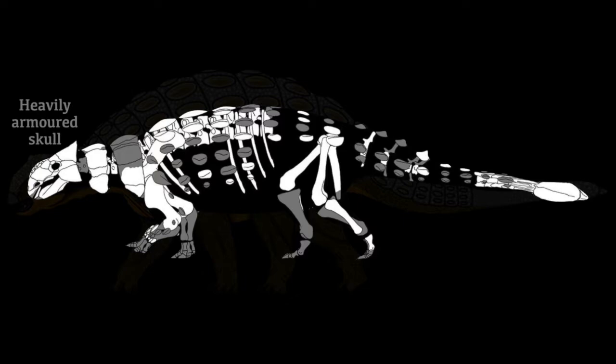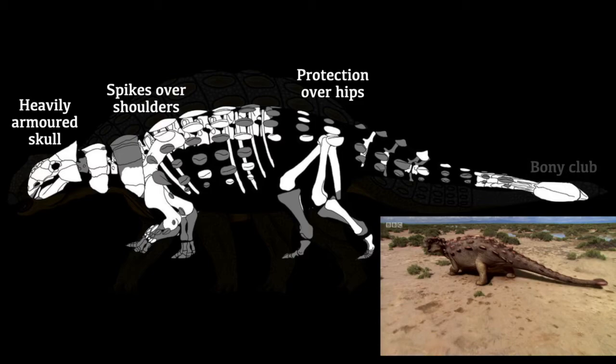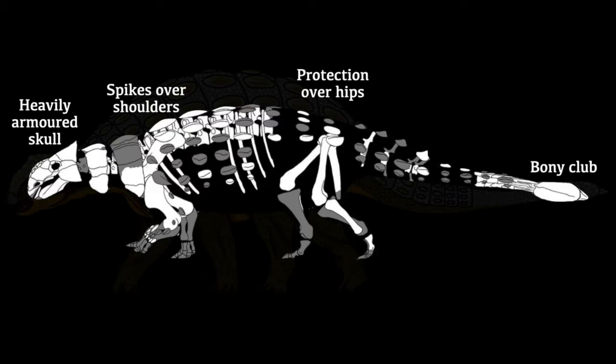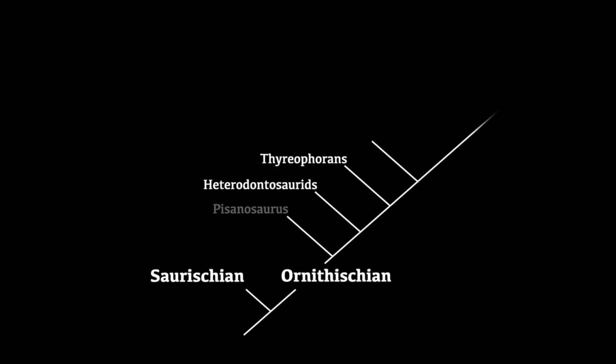The Ankylosaurs, by contrast, are defined by a heavily armoured skull, spikes over the shoulders, protection over the hips, and a bony club on the end of the tail. The little scutes developed into armour so complete that some species' eyelids were armoured. Examples include Ankylosaurus, Euoplocephalus, and Nodosaurus.